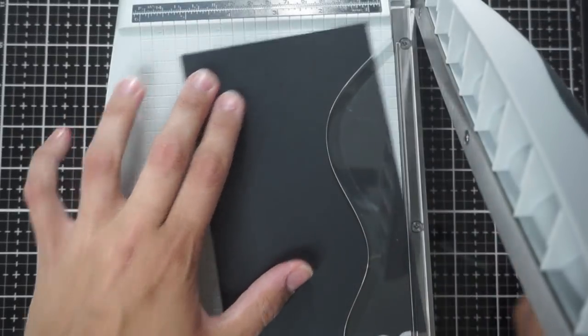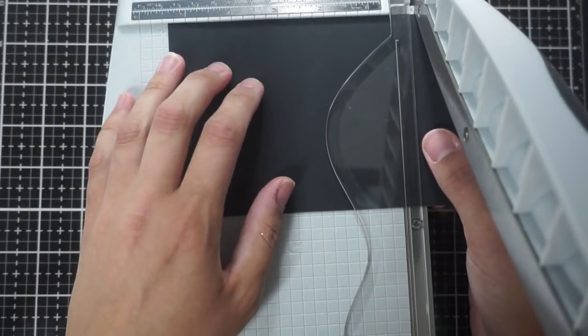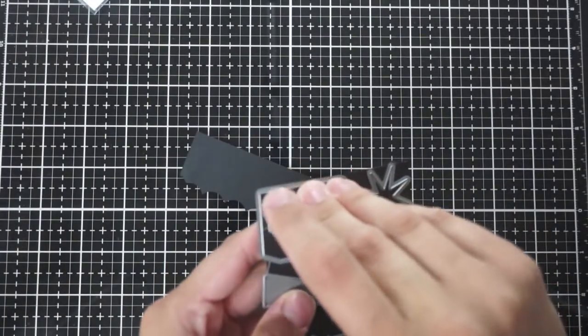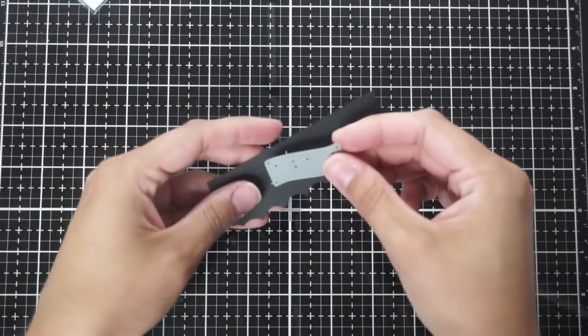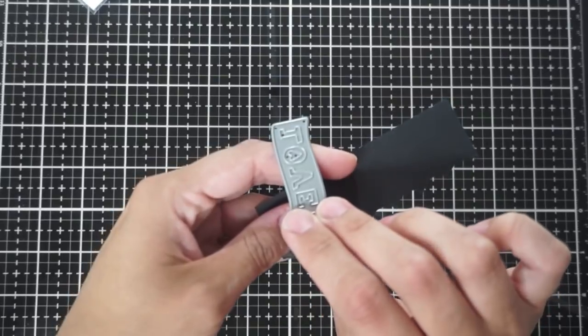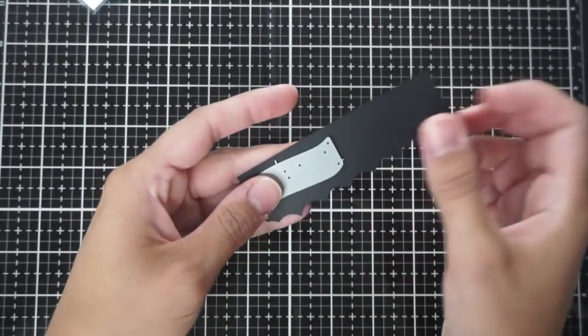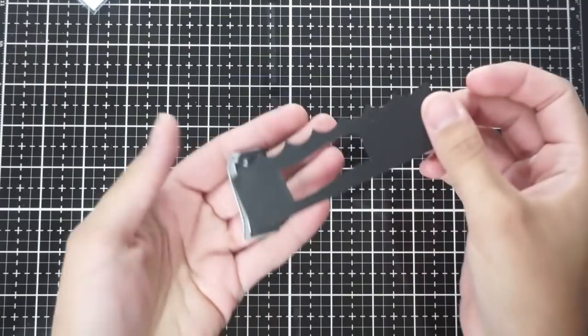I am taking a piece of Katherine Pooler Midnight cardstock here and cutting it just slightly bigger than the four by five and a quarter and just slightly smaller than the four and a quarter by five and a half size of the card base.